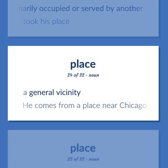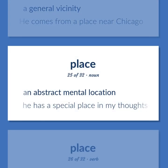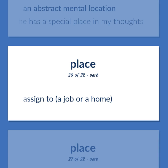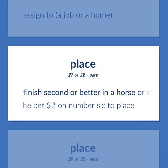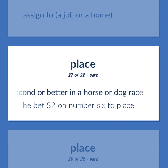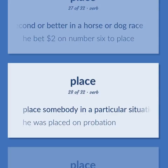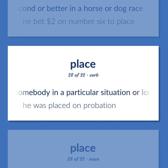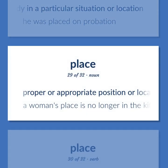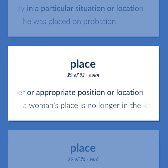A general vicinity. He comes from a place near Chicago. An abstract mental location. He has a special place in my thoughts. Assign to a job or a home. Finish second or better in a horse or dog race. He bet $2 on number 6 to place. Place somebody in a particular situation or location. He was placed on probation. Proper or appropriate position or location. A woman's place is no longer in the kitchen.